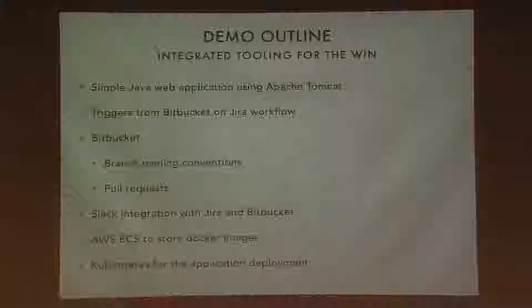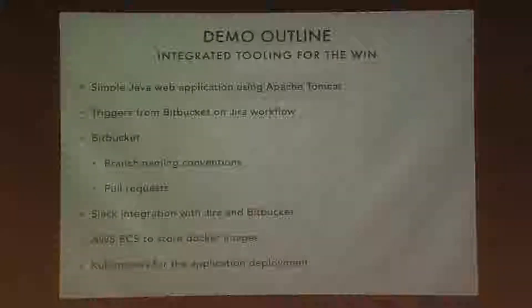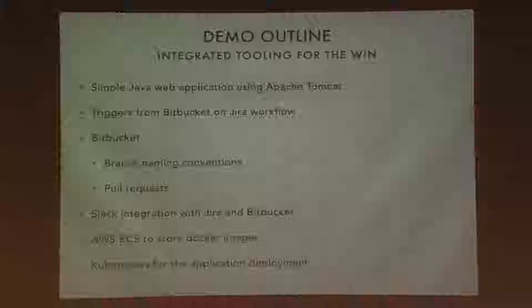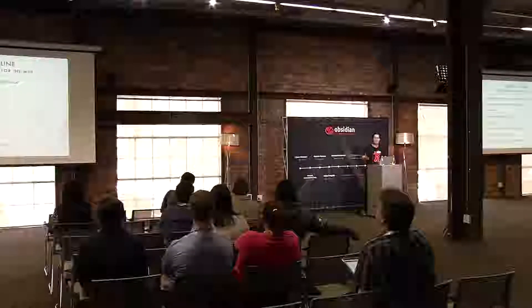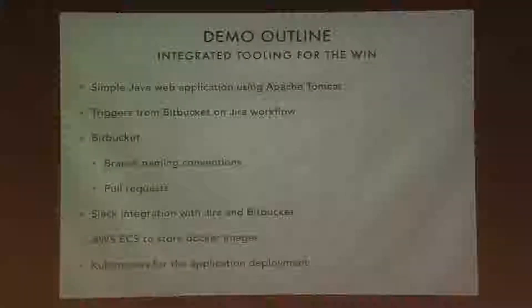What I'm wanting to demo is a very simple Java application and show you how we can use the Atlassian tooling — or at least some of it — to provide a fairly seamless development experience. I'm going to be using Bitbucket and JIRA, some Slack in there as well — Slack being the new way that we do instant messaging — and there's some AWS ECR in there as a container registry because my application is deployed into a Kubernetes cluster using a Docker image.